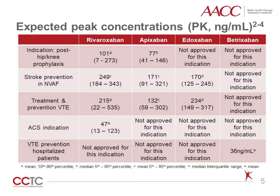This table details the expected peak or T-max concentrations based on prescribed dose for each indication for each anti-Xa DOAC. These values and ranges do not account for any adjustment due to renal insufficiency. Note the wide variability both within and between DOACs for each indication. Additionally, note the use of percentiles — a range representing the 10th to 90th percentile would indicate that 80% of treated patients would have these expected drug levels. Conversely, one out of five treated patients would fall outside, either lower or higher, than these expected ranges.